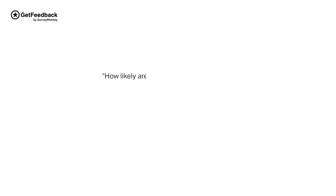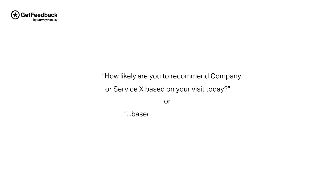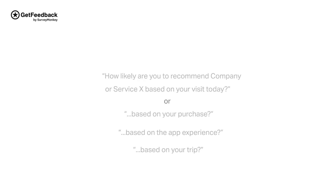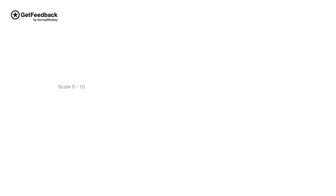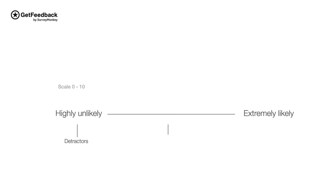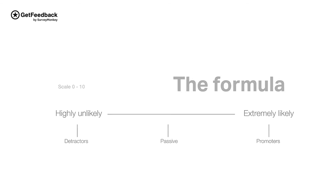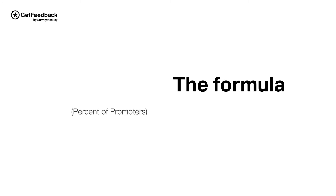For example, you can rephrase the NPS question as: how likely are you to recommend company or service X based on your visit today? Or based on your purchase, based on the app experience, based on your trip. Users rate their experience on a scale from 0 to 10, from highly unlikely to extremely likely to recommend. Users who score 0 to 6 are detractors, those who score 7 to 8 are passive, and a score of 9 or 10 makes them a promoter. To calculate your company's NPS, take the percentage of promoters and subtract the percentage of detractors.